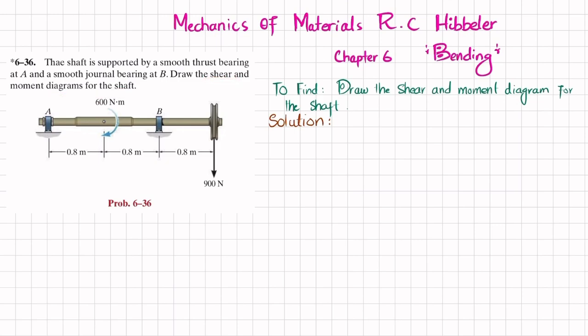Let's start with the solution. The first step is that you can see there is a 900 Newton load acting downwards. If you remove this smooth journal bearing at point B, you will have a reaction force that will be upward — let this be R_B — and if you remove this thrust bearing, this force will be downward, which is equal to R_A. So you can find R_A and R_B by using equations of equilibrium.